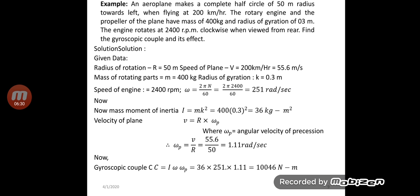The problem states: An aeroplane makes a complete half circle of 50 metre radius towards the left, flying at 200 km per hour. The rotary engine and propeller of the plane have a mass of 400 kg and a radius of gyration of 0.3 metre. The engine rotates at 2400 rpm clockwise when viewed from the rear. Find the gyroscopic couple and its effect.